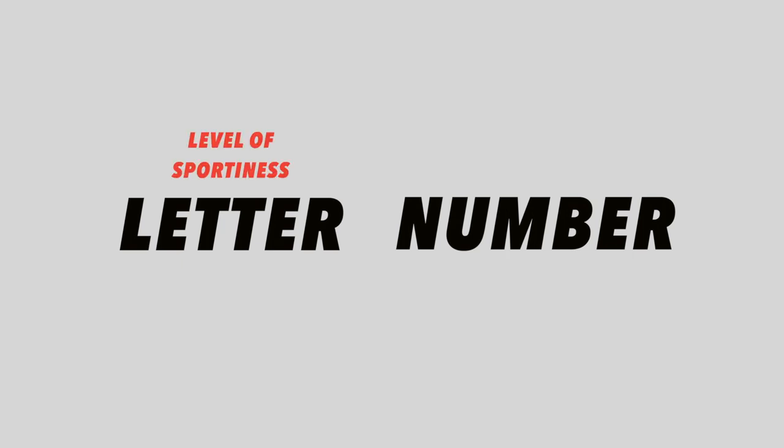The basic Audi model has a letter followed by a number. The letter represents how, or how not, sporty the model is, and the number represents the size of the vehicle. Here in the US — I'm only going to be talking about US models in this video — we have six differently sized models. But before I elaborate on that, I want to introduce you to the first of five letters in the Audi alphabet.